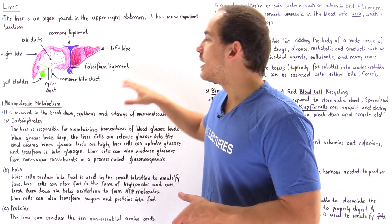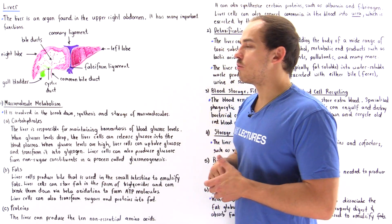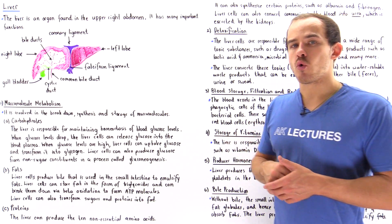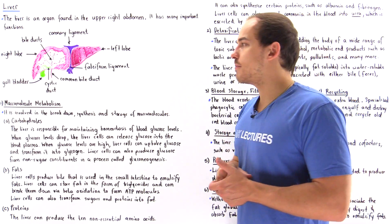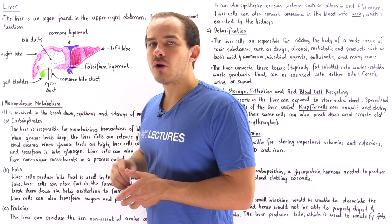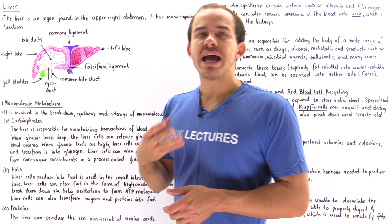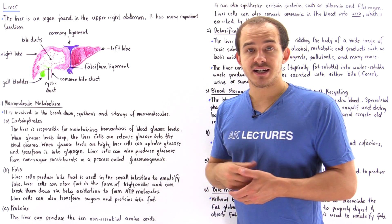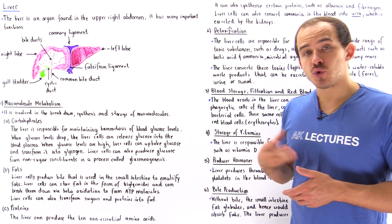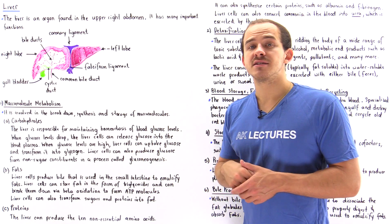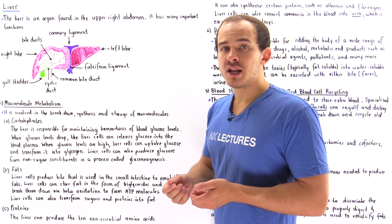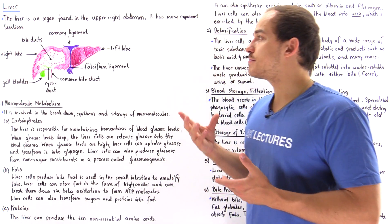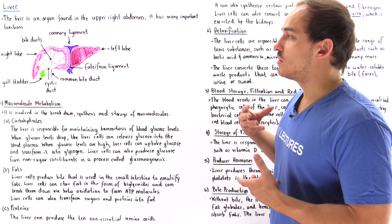For example, the falciform ligament connects the liver to the anterior portion of the body. Within our liver we have many ducts, many canals that function to allow the passageway and movement of certain substances produced by our liver.